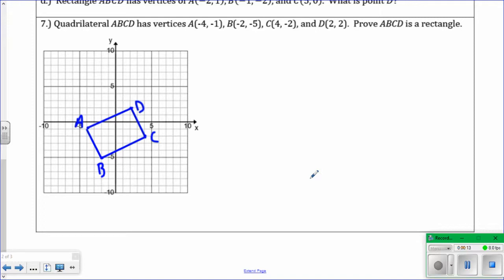First, what you want to do, whether it's a rectangle, rhombus, or square, is prove it's a parallelogram. To prove it's a parallelogram, opposite sides are parallel, which means they have the same slope.